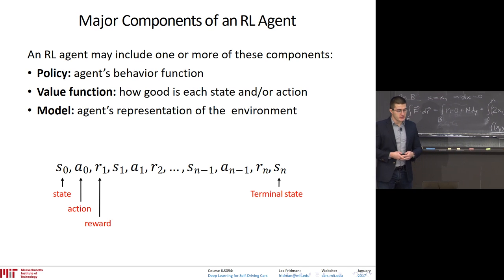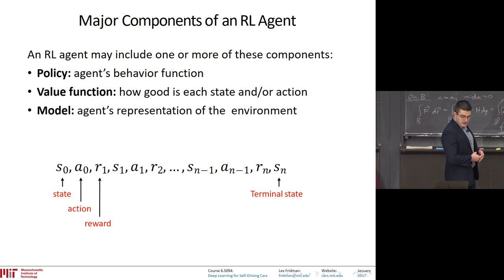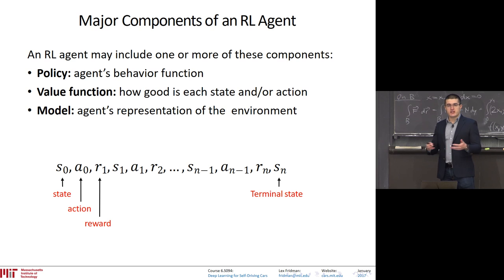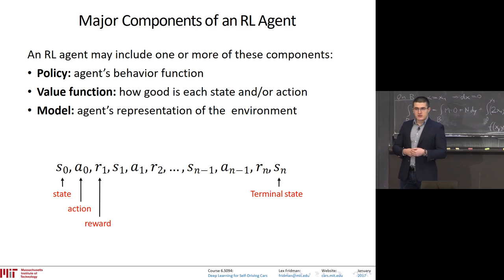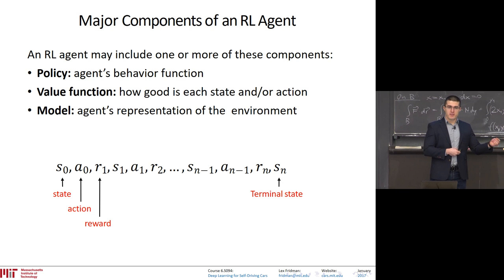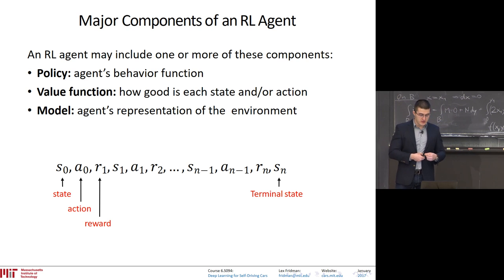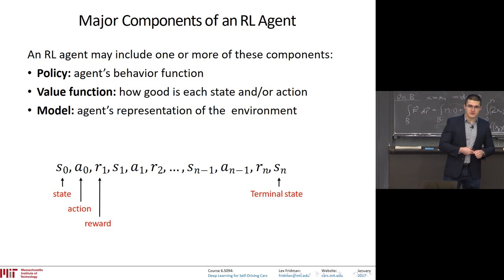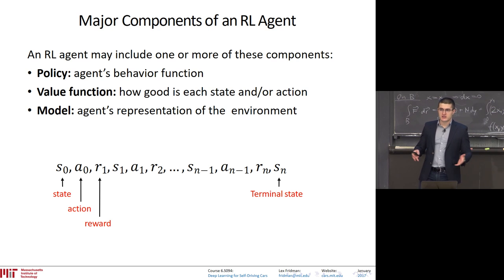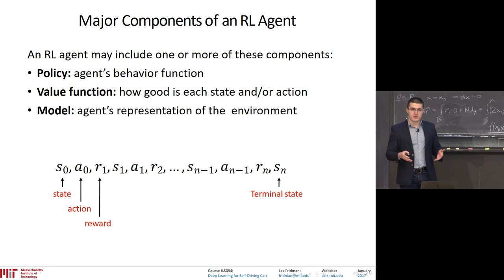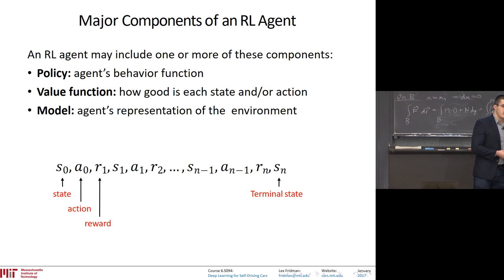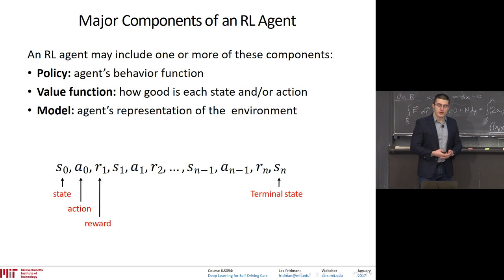What are the major components of a reinforcement learning agent? There's a policy — the function broadly defined of an agent's behavior, including knowledge of what action to take in any given state with some probability. There's a value function — how good each state and action are. And there's a model — how we represent the environment. What you'll see today is amazing things neural networks can achieve on a relatively simplistic model of the world, and the question is whether that model can extend to the real world where human lives are at stake, as in the case of driving.